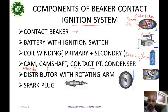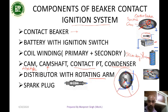The contact point is shown in red color, and this is the condenser. This is the distributor with the rotating arm — this is the rotating arm. These are the distributor points, and the last component is the spark plug.